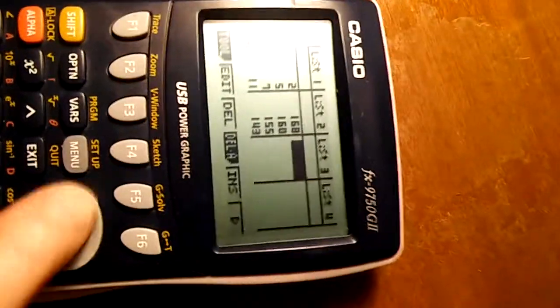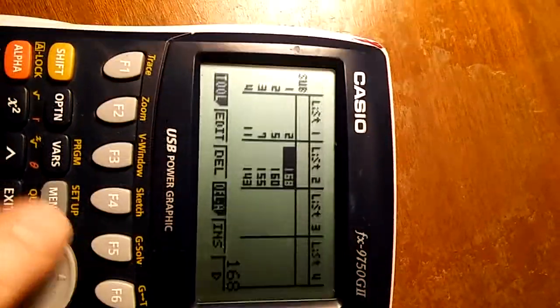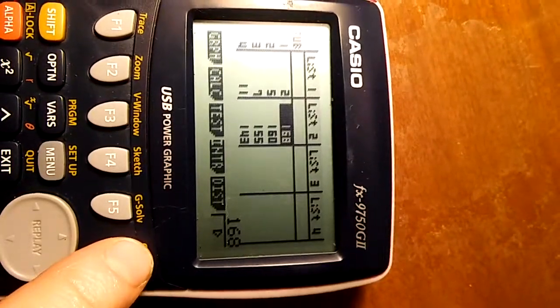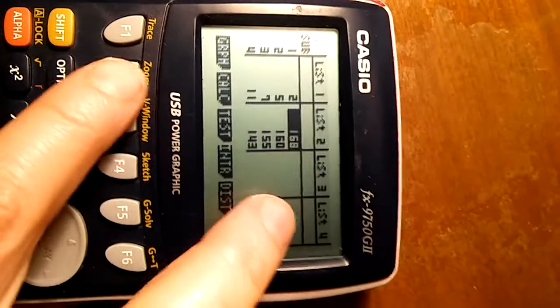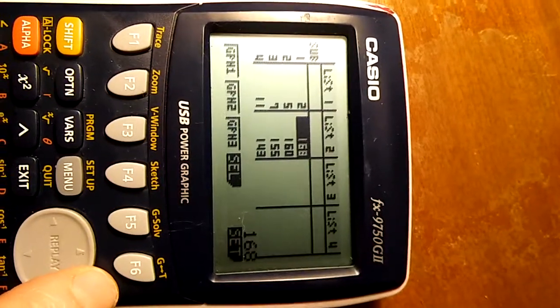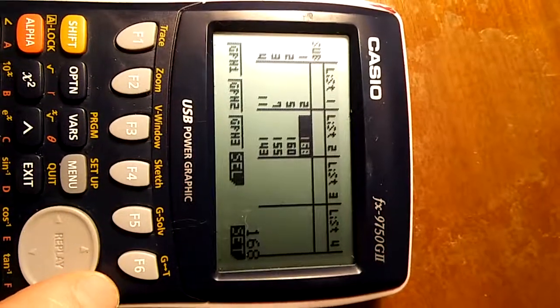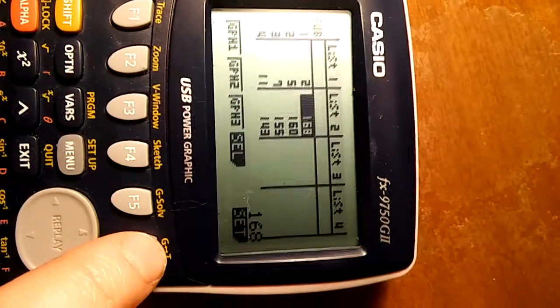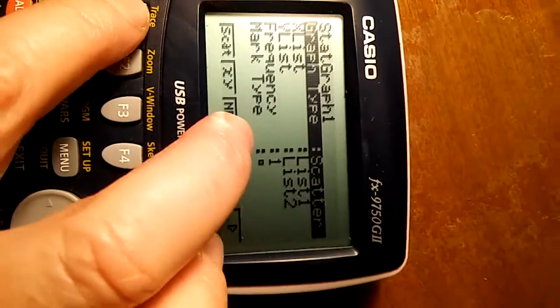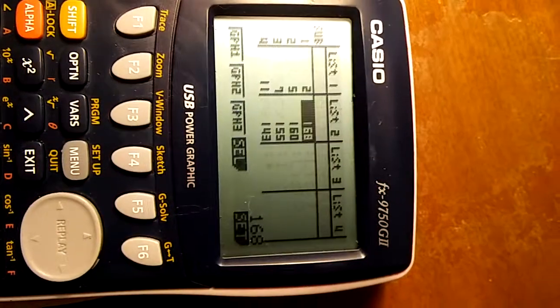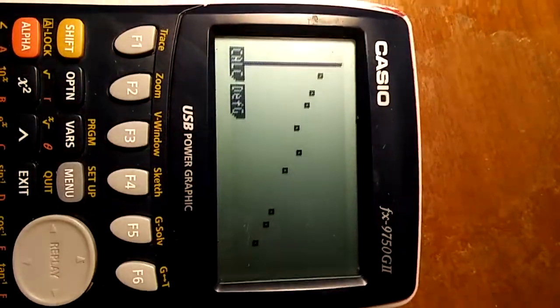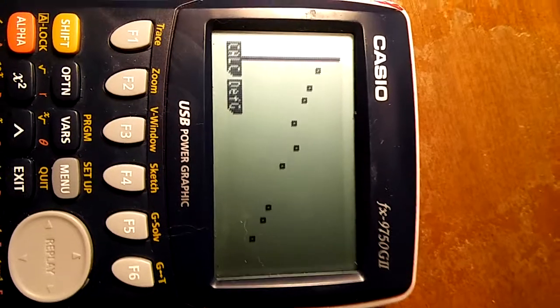Once we've done that, we need to press graph. Now if you press graph 1, if you did this last time we set up to do a scatter graph. If not, you have to press setting and go down to graph type and make sure it says scatter by pressing F1. Then press the blue button, then press graph 1, and you can see the scatter graph has been drawn for you.